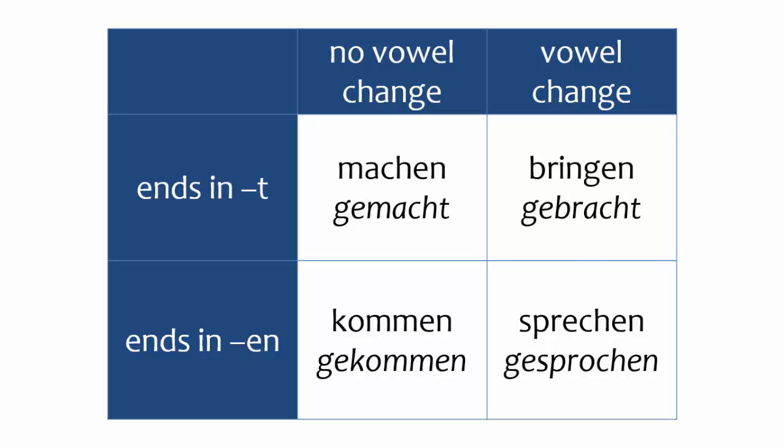Many highly common verbs have what you might think of as irregular past participles. One category, an example of which is BRINGEN in the upper right, has a participle with the expected T at the end, but it shows a vowel change.